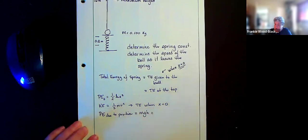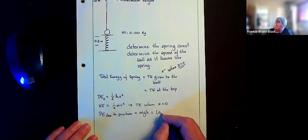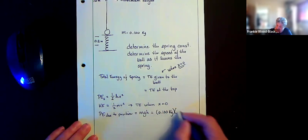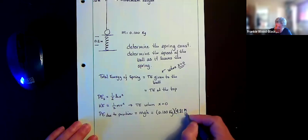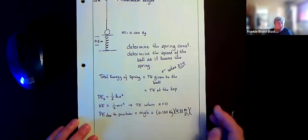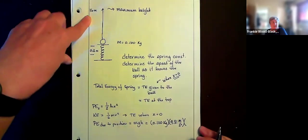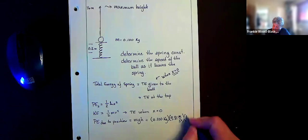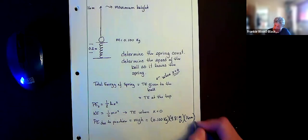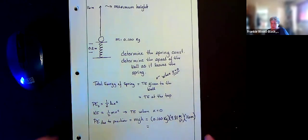And that one we can calculate right away because we're told that this is 0.100 kilograms. We know our acceleration due to gravity is 9.81 meters per second squared. And we're told from the problem that the ball reaches a height of 16 meters. So we've got that in there, so we can actually do that calculation.